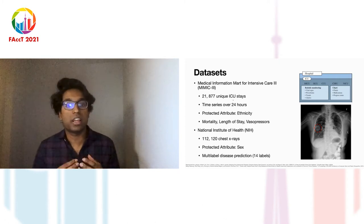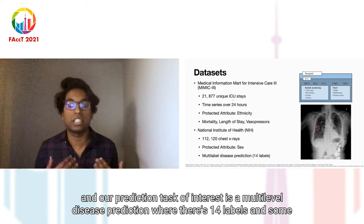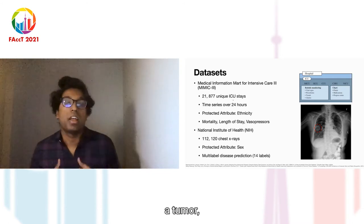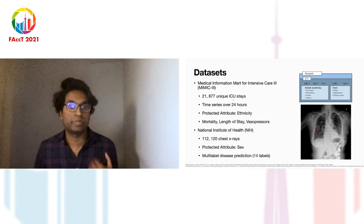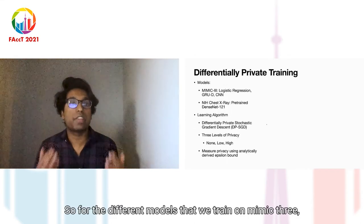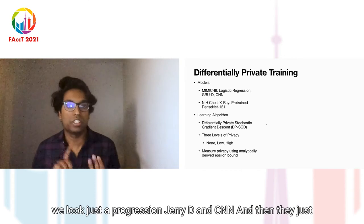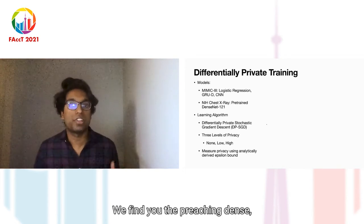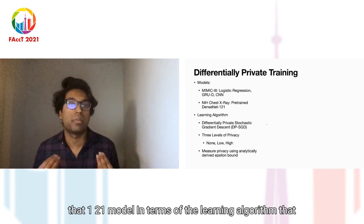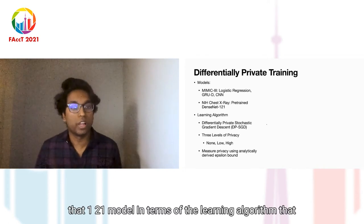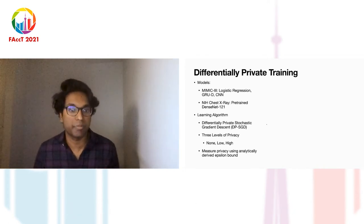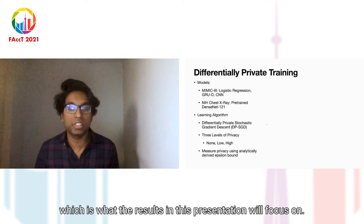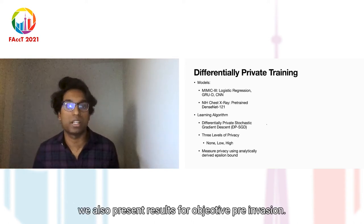Our prediction task of interest is multi-label disease prediction with 14 labels, including emphysema, tumor, collapsed lung, and others. For the models trained on MIMIC-3, we look at logistic regression, GRUD, and CNNs. For the NIH chest X-ray dataset, we fine-tune a pre-trained DenseNet-121 model. For the learning algorithm used to guarantee differential privacy, we use differentially private stochastic gradient descent (DP-SGD), which the results in this presentation will focus on. The paper also presents results for objective perturbation.